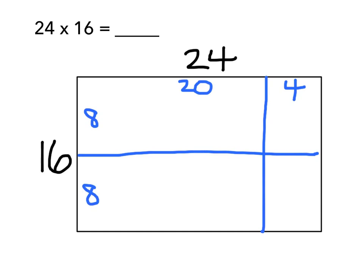So in my first array, I have 20 by 8, which is 160, because 10 times 8 is 80, and 20 times 8 would be double that. And this piece is also equal to 160 because it is 20 by 8.